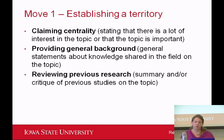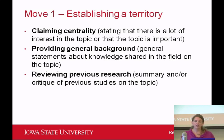There are three steps within move one. The first step is claiming centrality — this is where we state that what we're about to discuss is important, that other people have a lot of interest in it, and it's timely and necessary. The second step is providing general background, where you talk about general information that people in your field would know. The third step is reviewing previous research, where you summarize or critique previous studies done on your topic. I'll give you examples of each step, then some to practice, and then we'll wrap up.